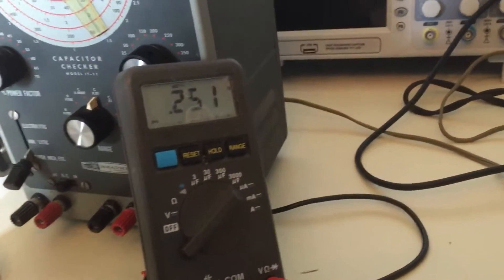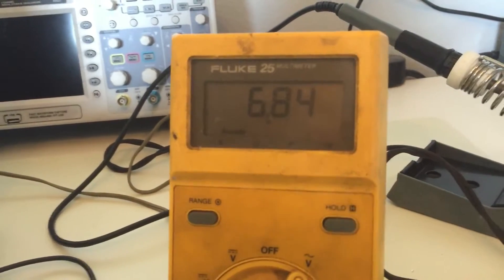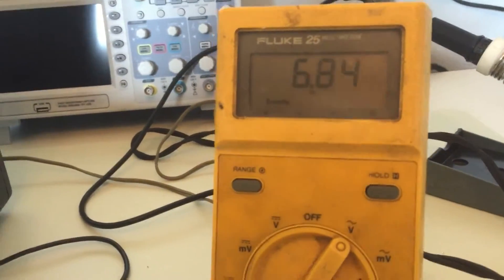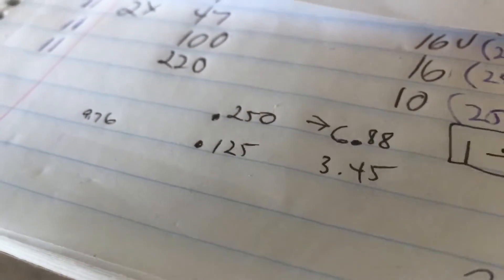So now I have a quarter of a volt, and we see that it did double. It went from 3.44 to 6.88. And by taking those values, and I have some other values that I recorded before, you can see they're just about the same right there.